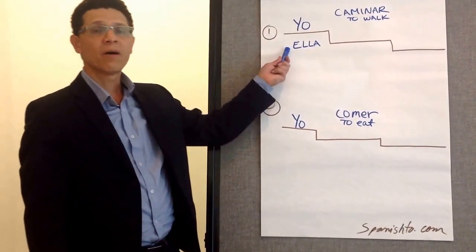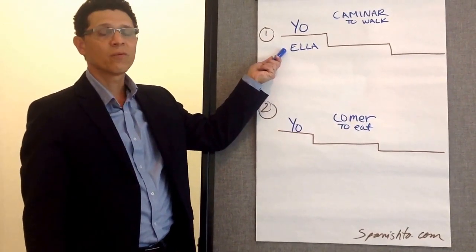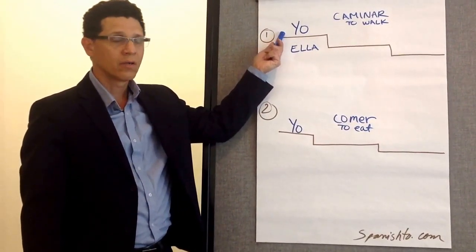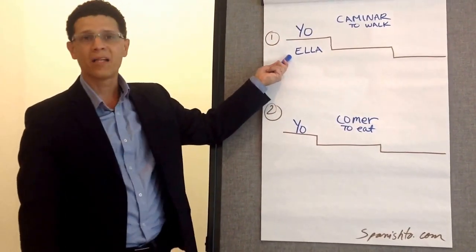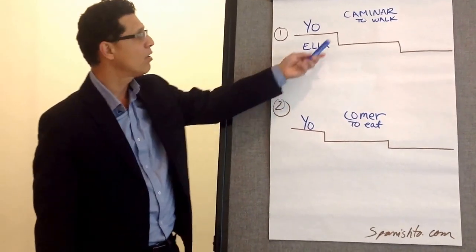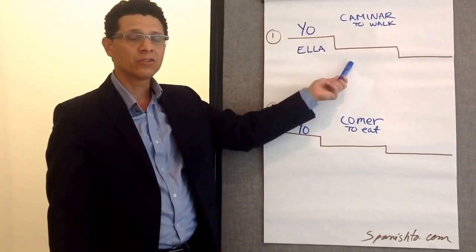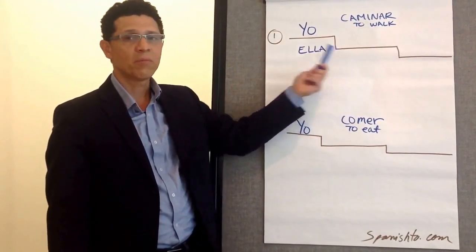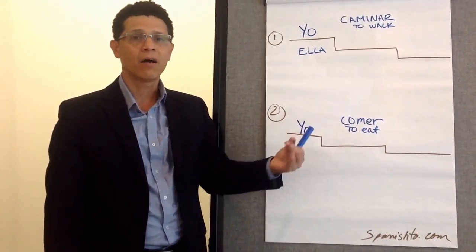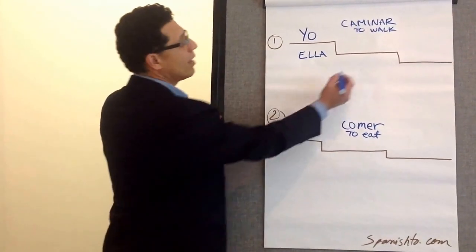Remember, we always have to have a subject. In this case, we're going to work with the person I — yo — and we're going to add the person ella, she. In the middle, we will have a verb or a message. Remember, we have three kinds of verbs: A-R, E-R, and I-R. Write it down.